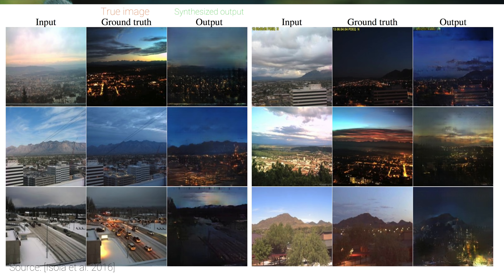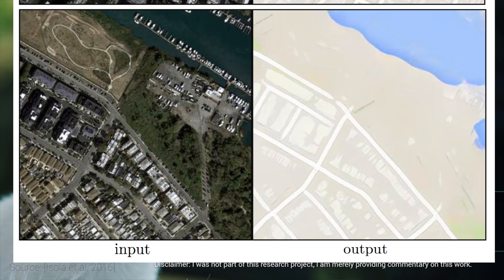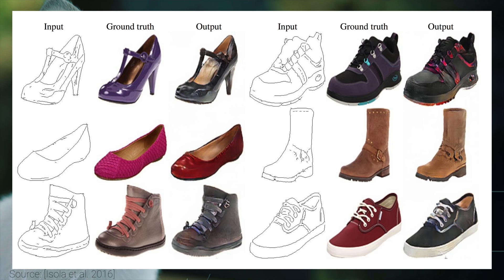Do you remember the amazing Pix2Pix algorithm from last year? It was able to perform image translation, which means that it could take a daytime image and translate it into a nighttime image, create maps from satellite images, or create photorealistic shoes from crude drawings. I remember that I almost fell off the chair when I first seen the results.